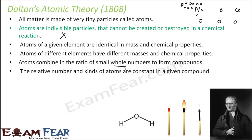The relative number and kind of atoms are constant in a given compound. You take any compound — for example water from various sources: sea, lake, well, tap — the composition of water will be the same. The relative number of hydrogen and oxygen atoms will be constant; it will always be H₂O.